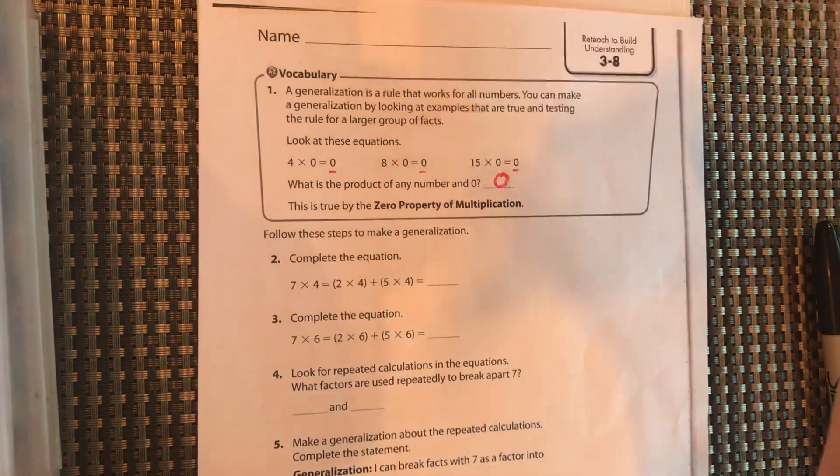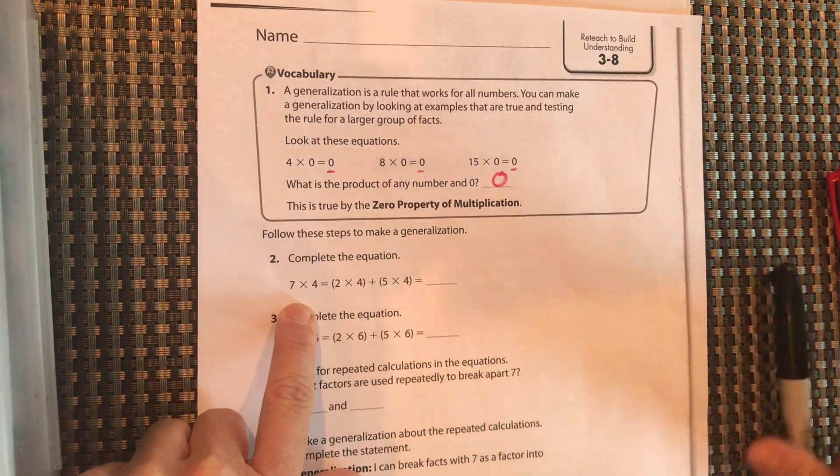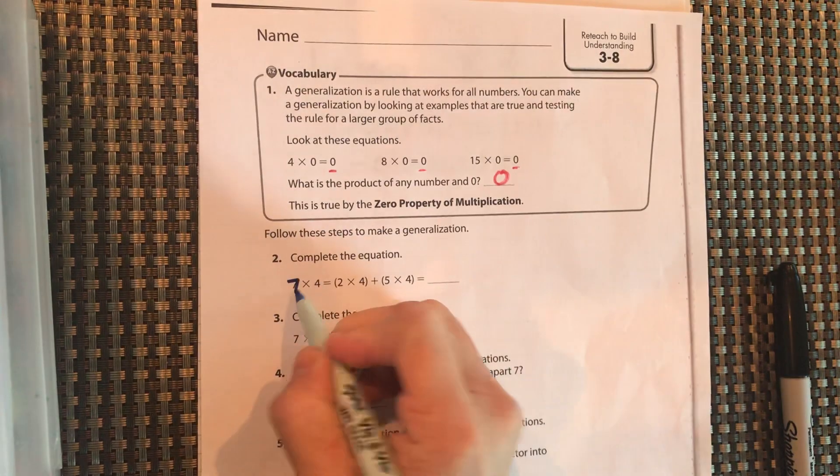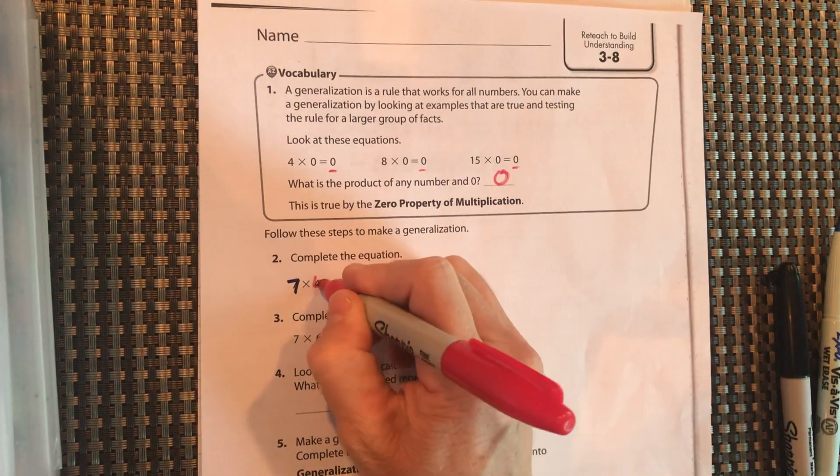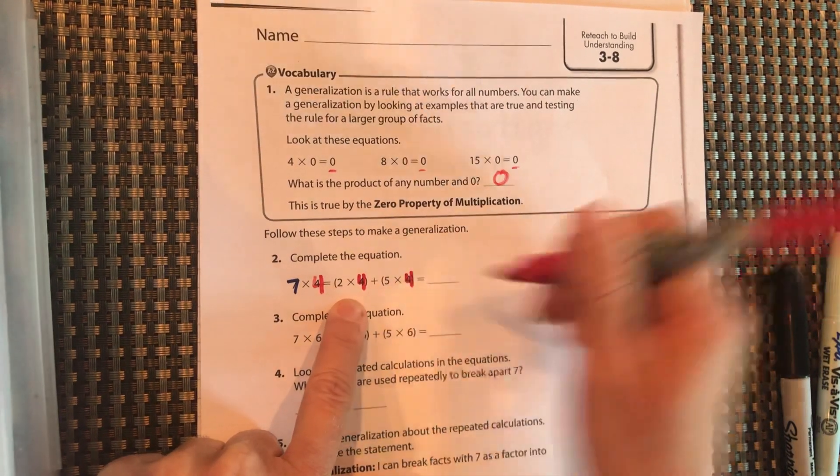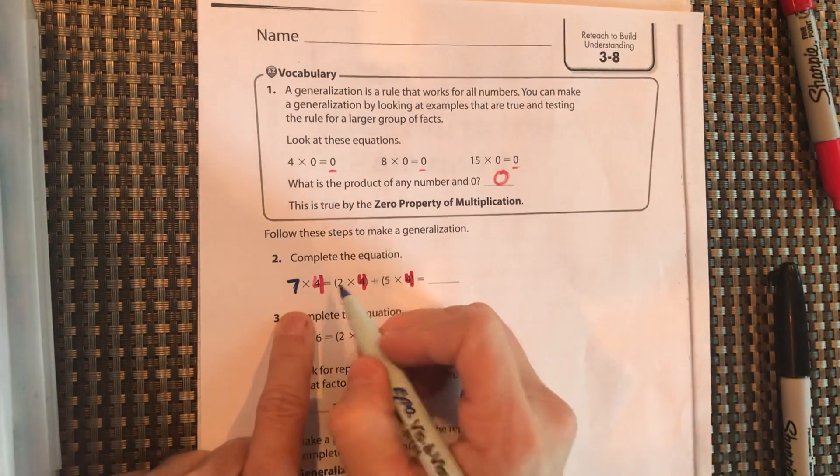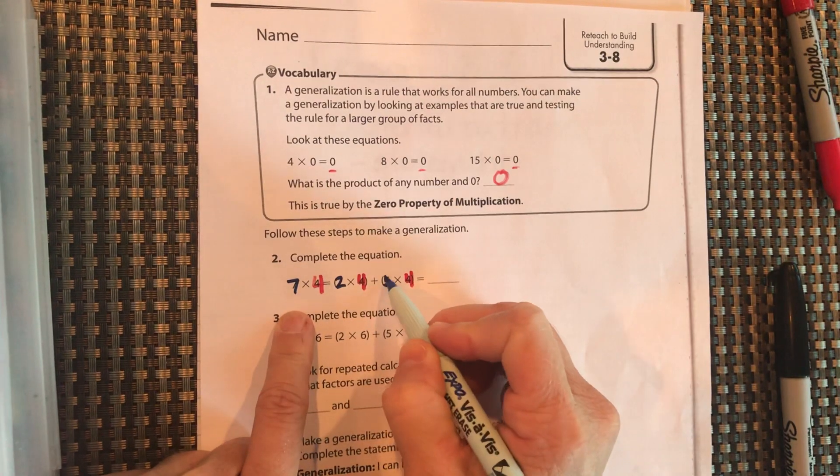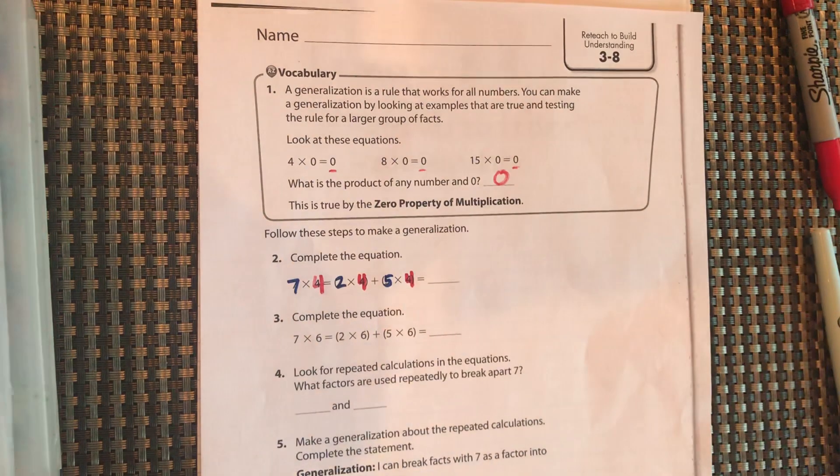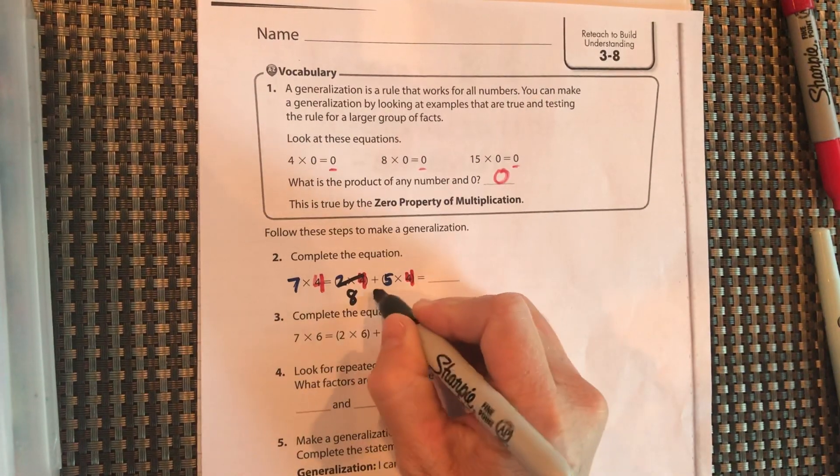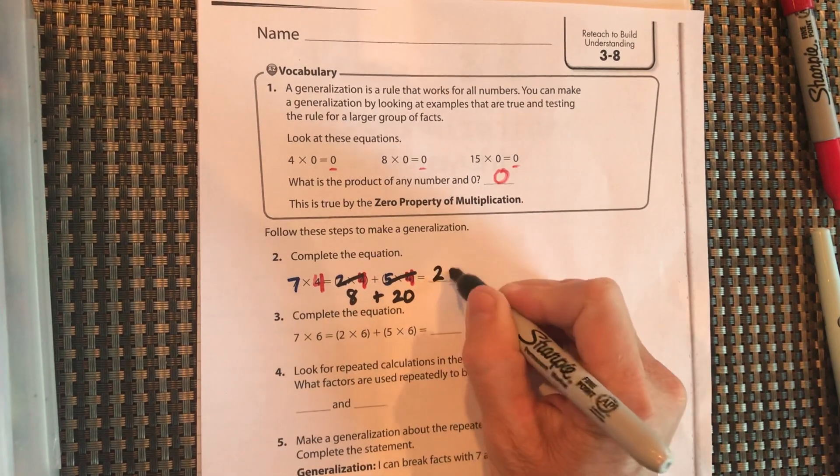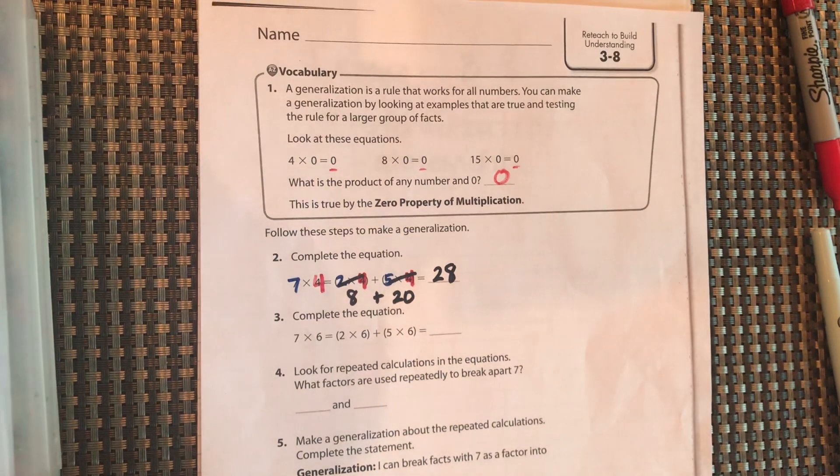Okay, so let's look at the distributive property over here. We have 7 times 4. Okay, one of our numbers has to stay the same. So our 4 is staying the same. Our 7 is getting broken up into 2 and 5. Okay, so we want to complete the equation. 2 times 4 equals 8. 5 times 4 equals 20. 20 plus 8 equals 28. Let's look at the next one.